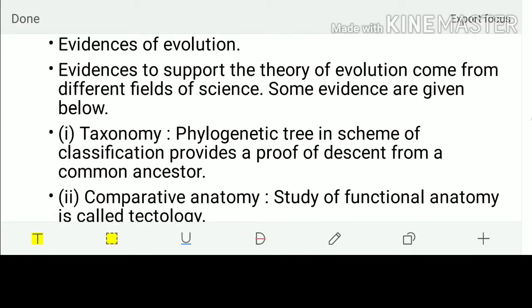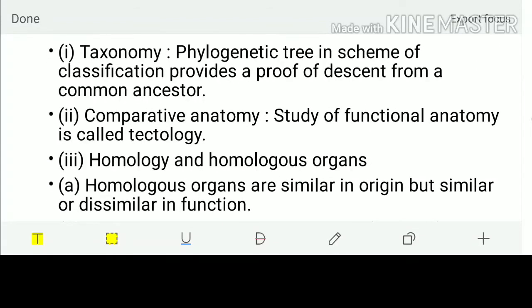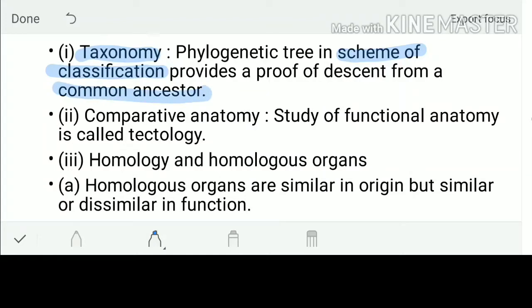Evidences of evolution — how science provides proof. To support the theory of evolution, different fields of science provide evidence. The first evidence is from Taxonomy: phylogenetic trees in the scheme of classification provide proof of descent from a common ancestor. In the cladogram, we have a common ancestor, giving us the evolution phenomenon.